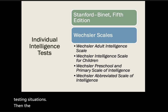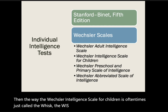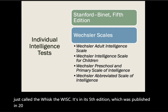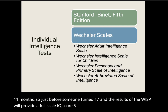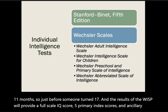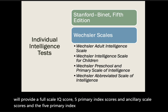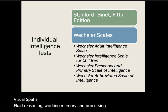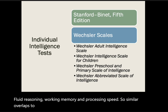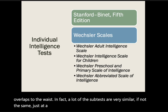The Wechsler Intelligence Scale for Children, or WISC, is in its fifth edition published in 2014 and is intended for children between the ages of 6 and 16 years and 11 months. Results provide a full-scale IQ score, five primary index scores, and ancillary scale scores. The five primary index scales are verbal comprehension, visual-spatial, fluid reasoning, working memory, and processing speed — similar to the WAIS, with many subtests mirrored at a level more appropriate for children.